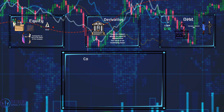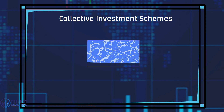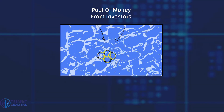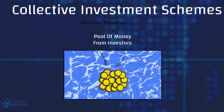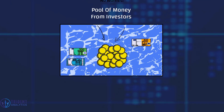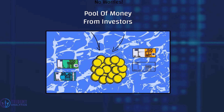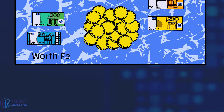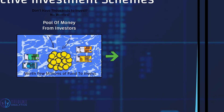Next, we look at collective investment schemes. Collective investment schemes are products where they pool money together from investors to invest as a pool. You may ask why we need to pool money. In reality, many investors don't have a lot of money — they may only have 50 ringgit, 100 ringgit, or 200 ringgit. The idea is that if you pool all these small amounts together, you can create a larger pool worth a million, two million, or even ten million, giving you better leverage and better exposure to a greater number of companies.